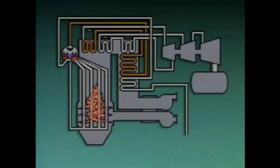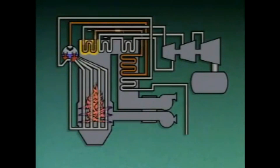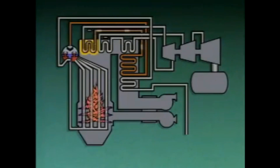The primary superheater is designed to raise the temperature of steam from its saturation temperature to a specific temperature range. The secondary superheater raises the temperature of the steam again. The secondary superheater is usually located closer to the boiler furnace so that it is exposed to higher temperatures. The secondary superheater may be either a convection superheater or, as in this case, a radiant superheater.